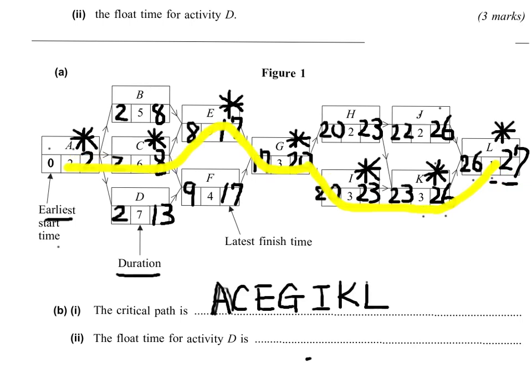So the critical path for this question is A, C, E, G, I, K, L.